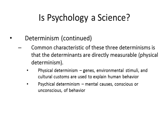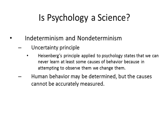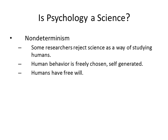As opposed to psychical determinism, where we have mental causes — conscious or unconscious influences on behavior. Regarding indeterminism and non-determinism: Heisenberg's uncertainty principle applied to psychology states that we can never learn at least some causes of behavior because in attempting to observe them, we change them. Human behavior may be determined, but the causes cannot be accurately measured. Non-determinism holds that some researchers reject science as a way of studying humans — human behavior is freely chosen, self-generated; we have free will.